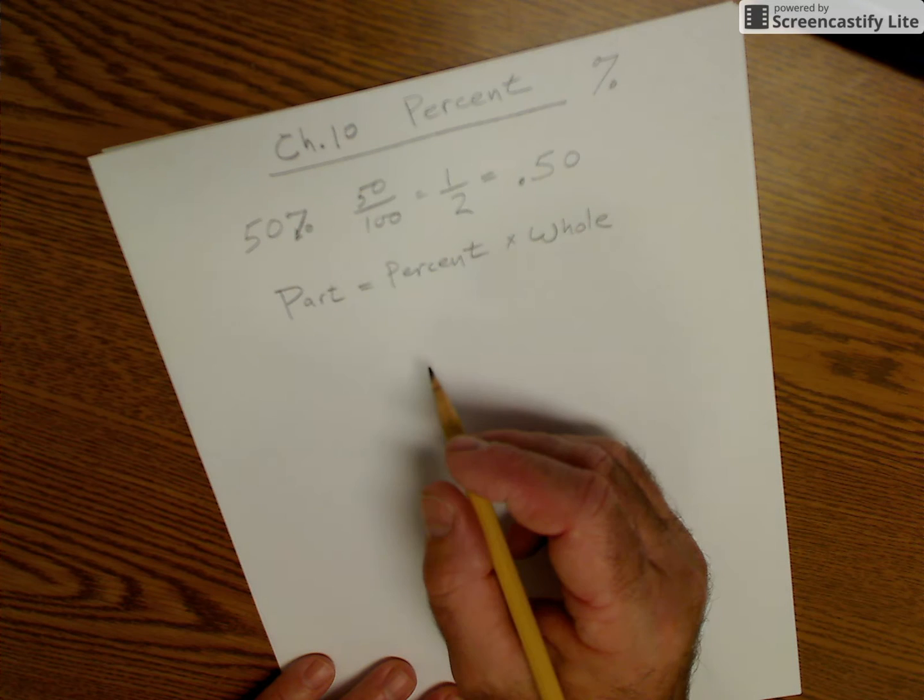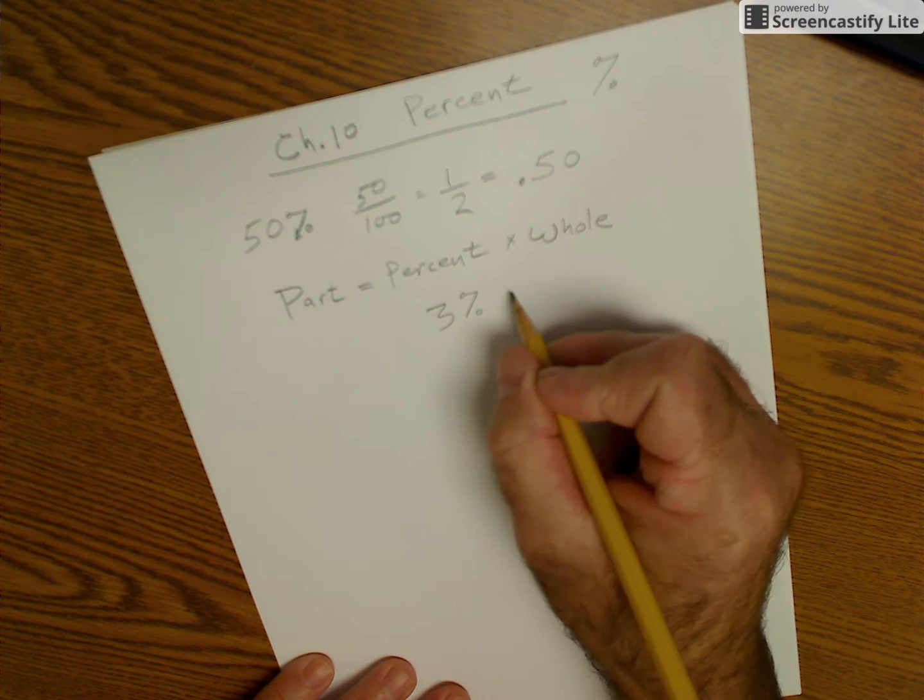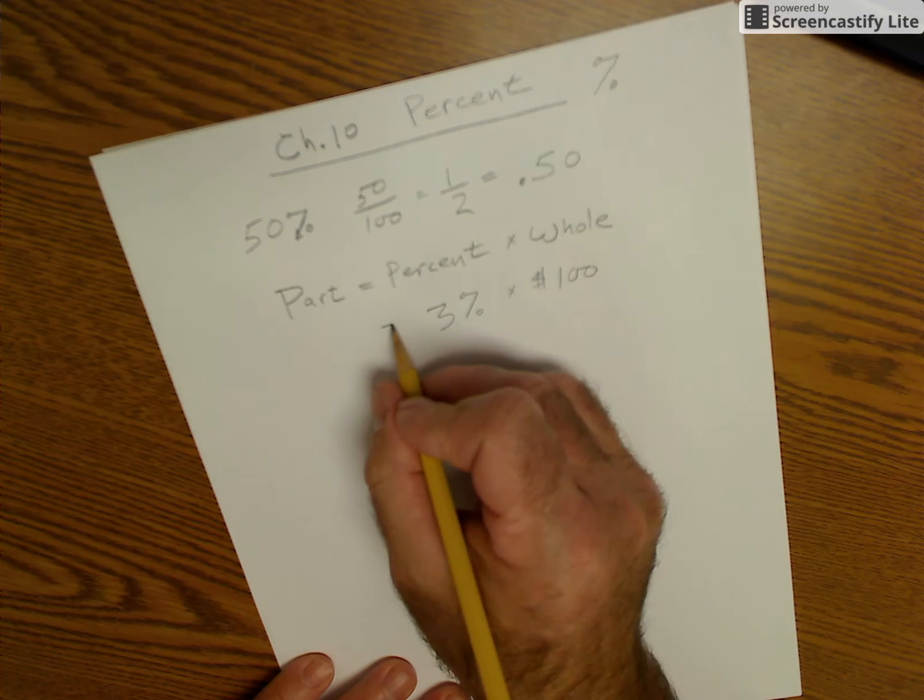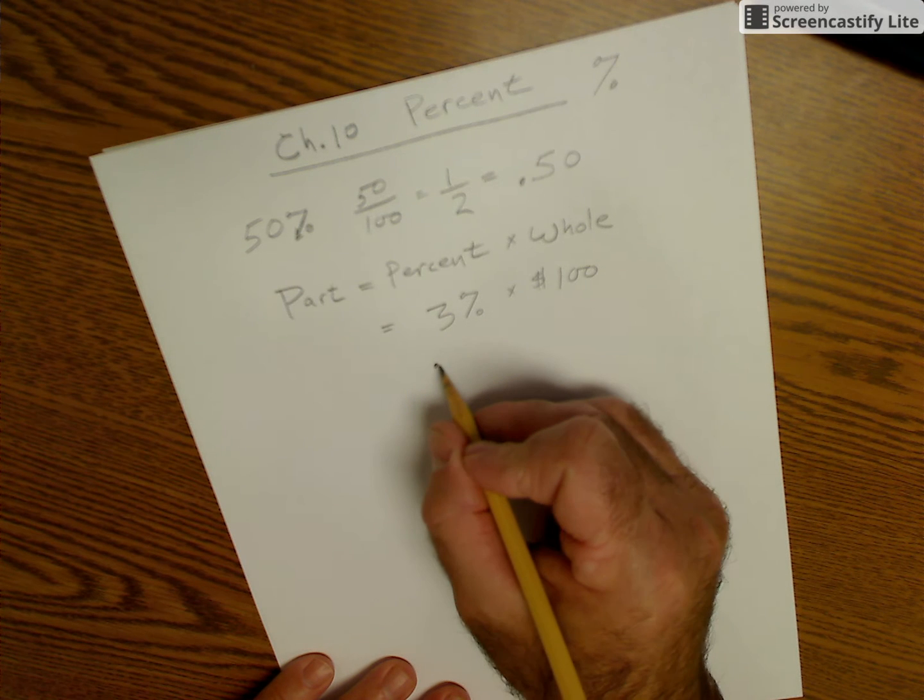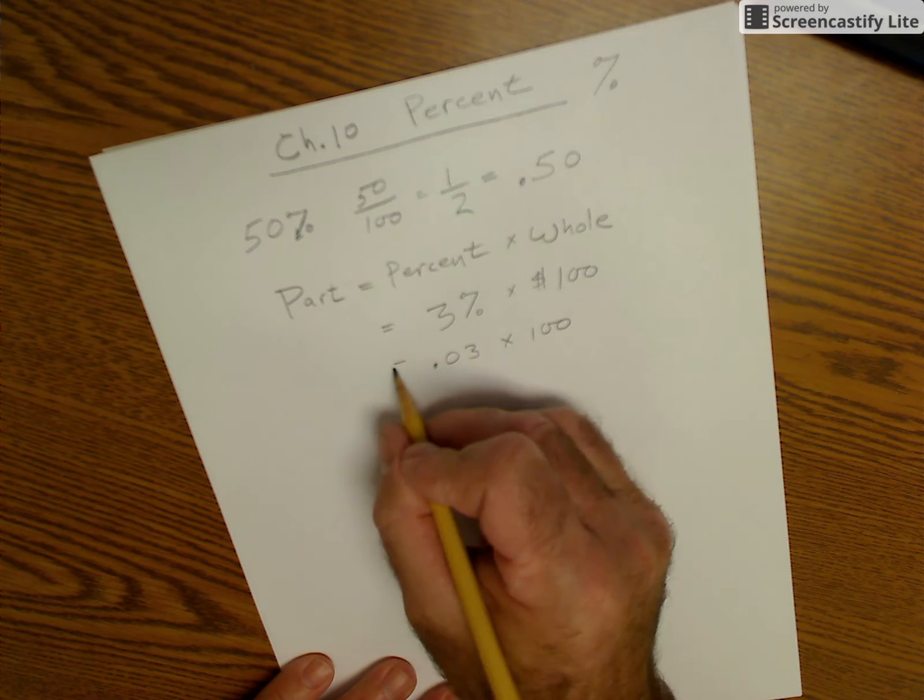So as an example, if I want to know what 3% of $100 is, that's the whole, that's the percent. The part is I convert this to a decimal. I go over 1, 2, 0.03 times 100, and that gives me $3.